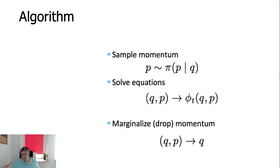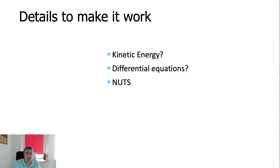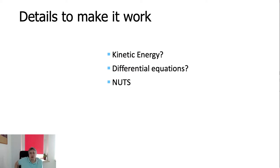Then we do a Metropolis-Hastings acceptance test to check if the sample is acceptable. We are generating a sample and verifying if it's acceptable — this is the simple idea, though the technicalities are more difficult and fortunately are implemented automatically. What we really need is kinetic energy — how to define it — and how to get the differential equations, which requires computing derivatives of the Hamiltonian with respect to two variables. How to efficiently cover the set will be addressed using NUTS — No U-Turn Sampling.